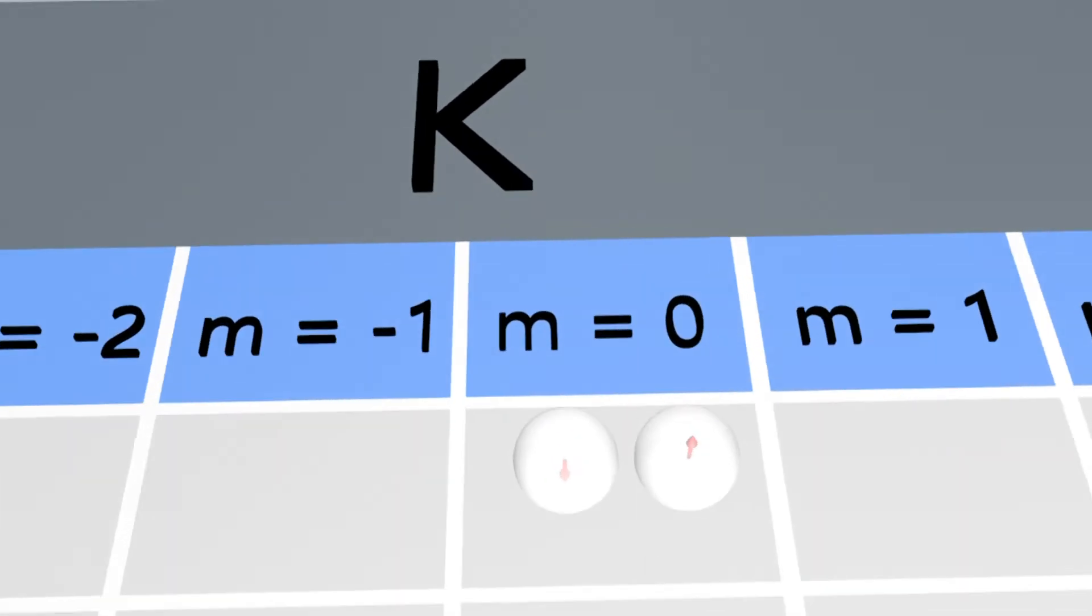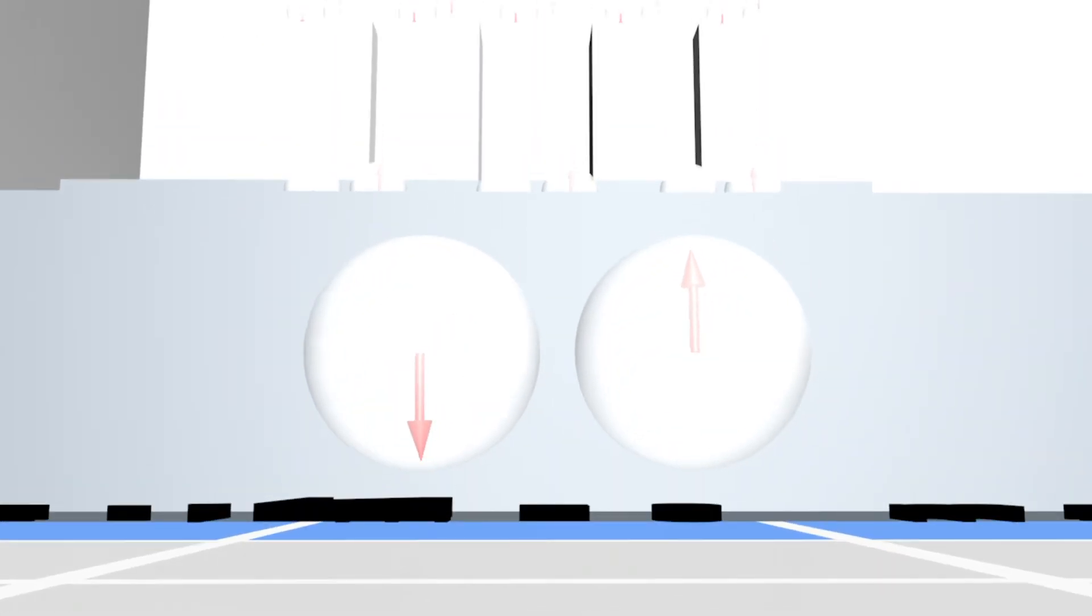However, if we take a closer look at the two electrons we notice a difference. The final missing quantum number of an electron, the spin, is what differentiates these two electrons.